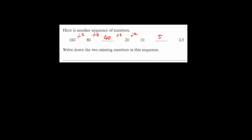The next question gives us the sequence 160, 80, blank, 20, 10, blank, 2.5. To get from 160 to 80 you halve it, and to get from 20 to 10 you halve it. So this sequence divides by 2 each time. So 160 ÷ 2 = 80, 80 ÷ 2 = 40, 40 ÷ 2 = 20, 20 ÷ 2 = 10, 10 ÷ 2 = 5, and 5 ÷ 2 = 2.5. So the two missing numbers are 40 and 5.